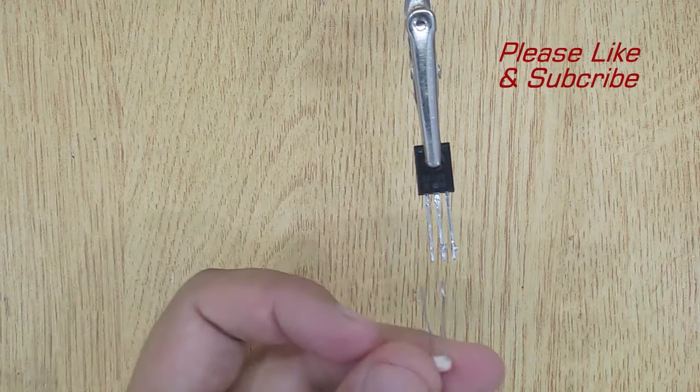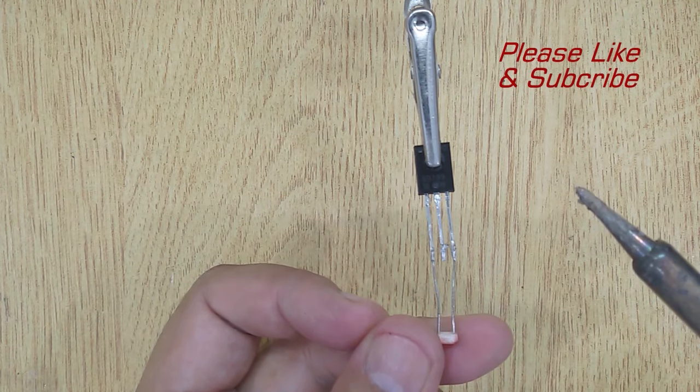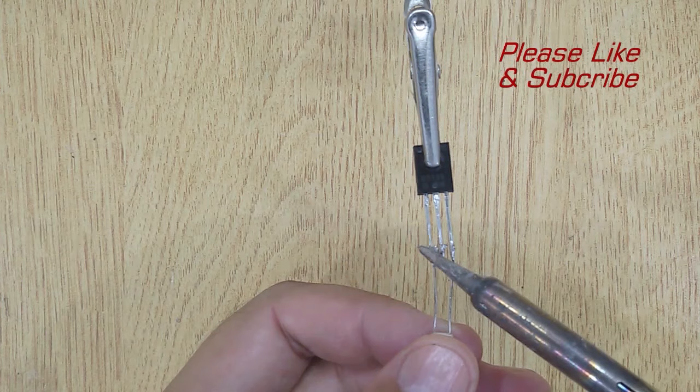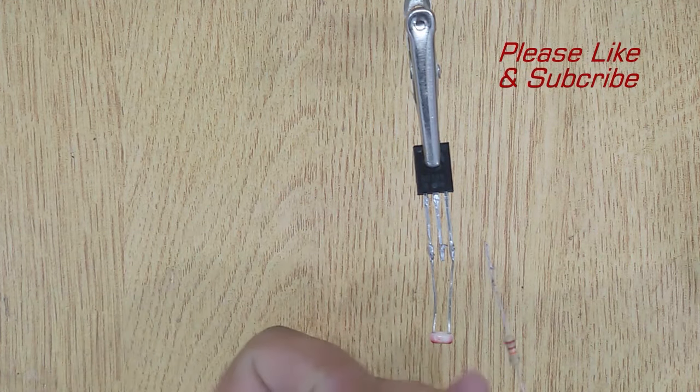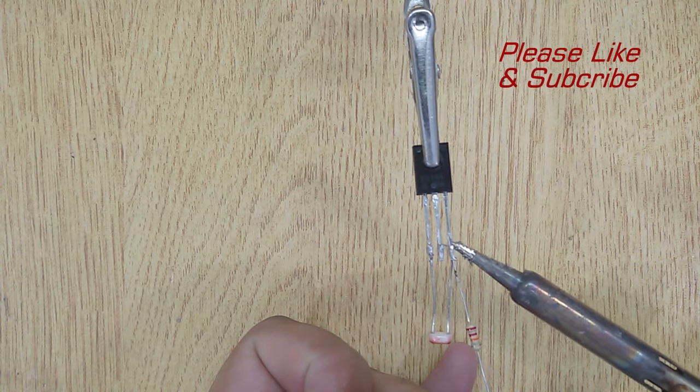Now let's solder the components. Solder both pins of LED with the emitter and base of the transistor BD-139. After that, solder 22 kOhms resistor with the base of the transistor.